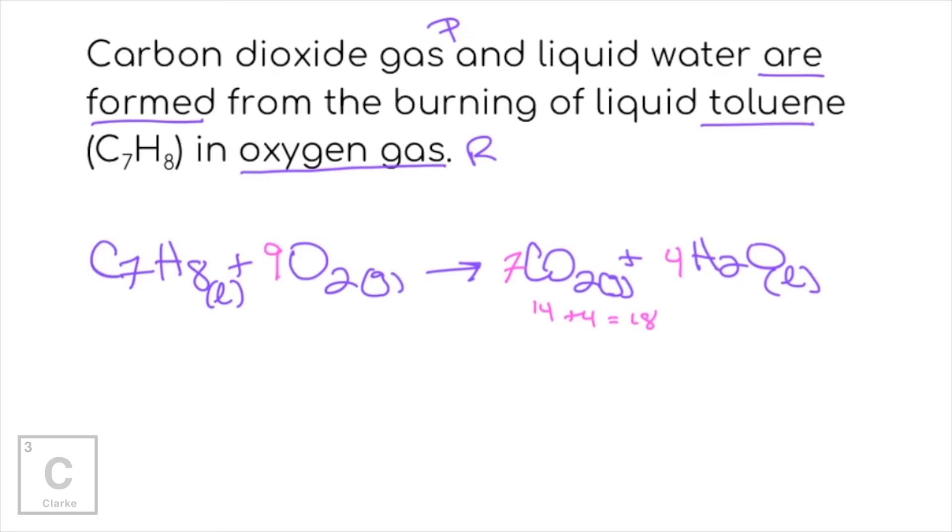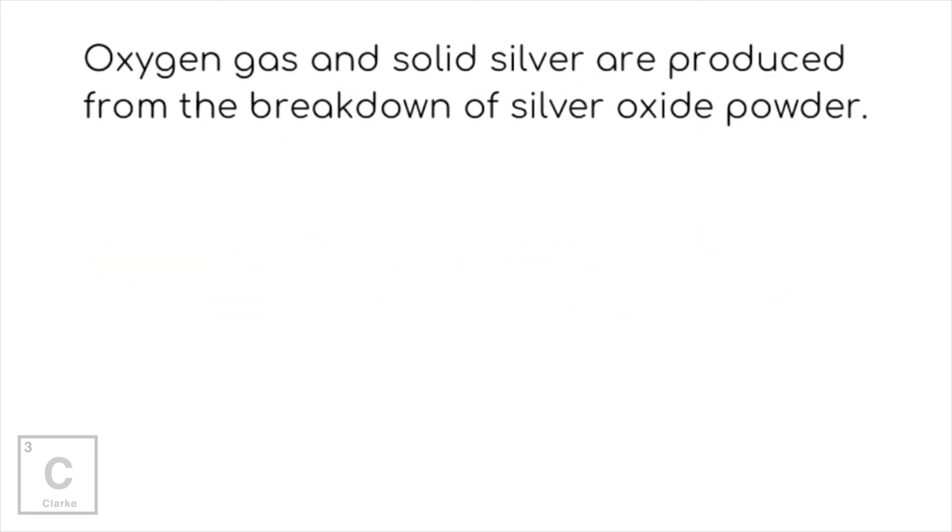Okay. I think I've got one or two more examples. Let's keep looking. Oxygen gas. Oh look. Oxygen gas came back to play and solid silver are produced. That means these are products from the breakdown of silver oxide powder. That's our reactant.